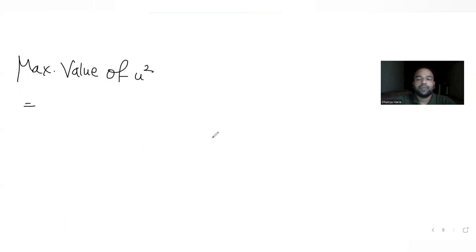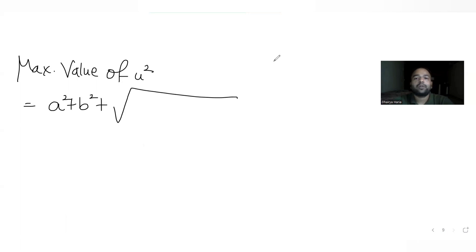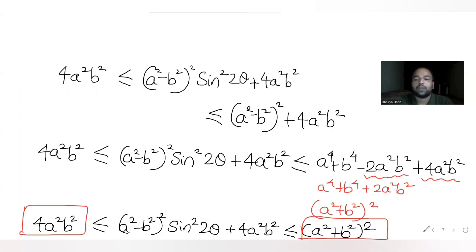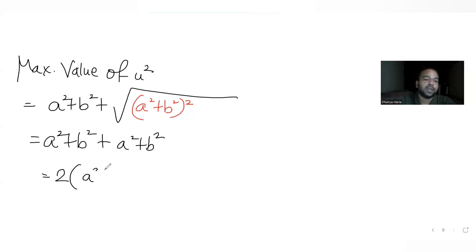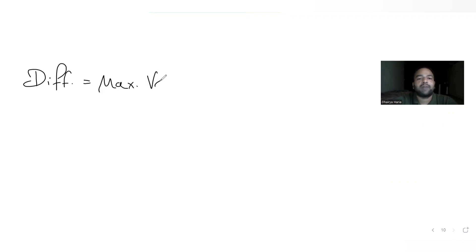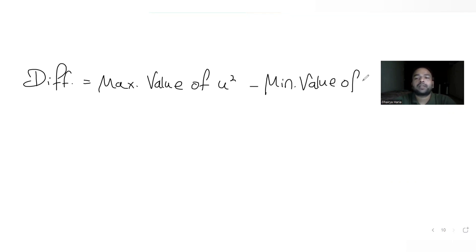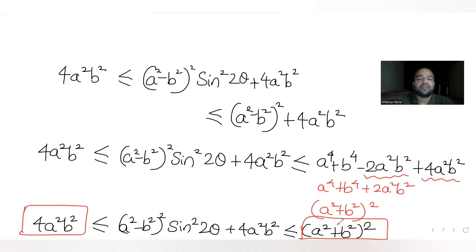The maximum value of u square is: a square plus b square plus root of (a square plus b square) whole square, which equals a square plus b square plus (a square plus b square), giving 2 times (a square plus b square). So maximum value of u square is 2(a square plus b square) and minimum value of u square is (a plus b) the whole square.